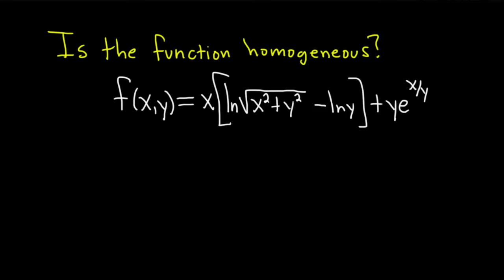In this video we have a function f(x, y) equal to x times the natural log of the square root of x squared plus y squared, minus the natural log of y, plus y times e to the x over y. The question is: is the function homogeneous?